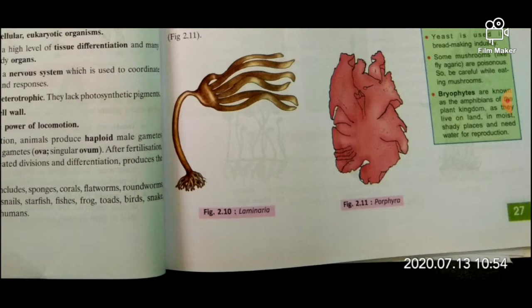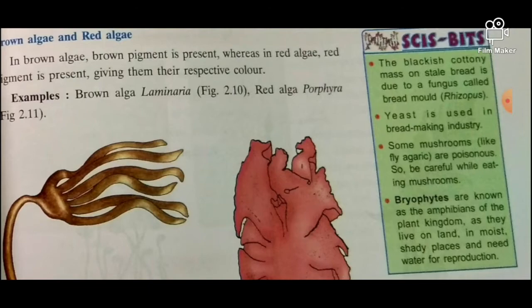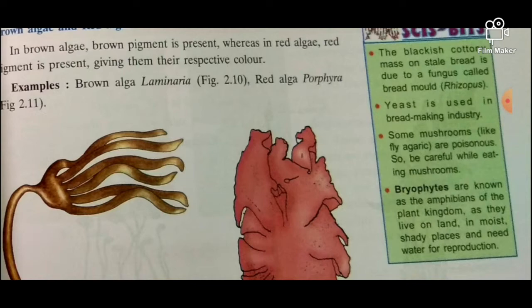You must have seen stale bread — there is a blackish cotton-like mass over the bread. That is due to a fungus called bread mold; it is a Rhizopus. Yeast is used in the bread-making industry. Some mushrooms are poisonous, so be careful while eating mushrooms.